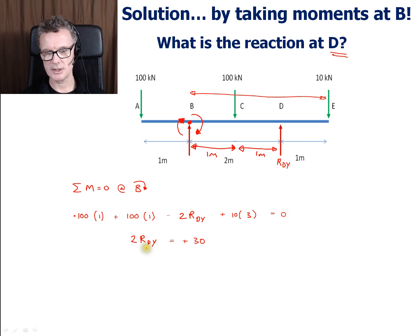So I guess some people forgot to divide by two at this stage. So 30 divided by two is going to give me 15 kilonewtons.